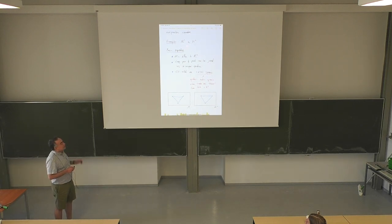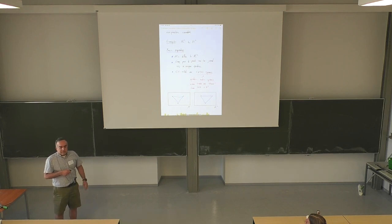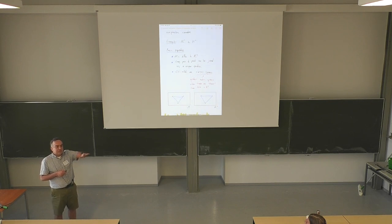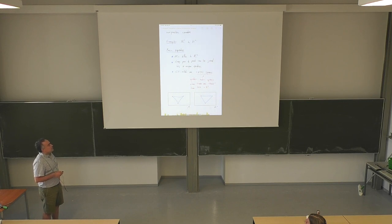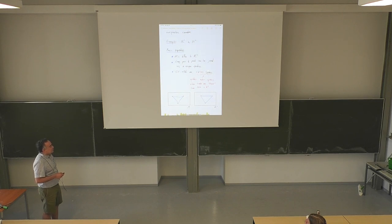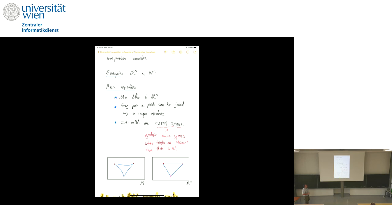By the Cartan-Hadamard theorem, a Cartan-Hadamard manifold is always diffeomorphic to Euclidean space because the exponential map gives a diffeomorphism. You take a point on your manifold, look at the tangent space, look at all the various directions, extend the geodesic from each direction, and this gives a global diffeomorphism between your tangent space and your manifold. It follows that every pair of points can be joined by a unique geodesic. Cartan-Hadamard manifolds are also CAT(0) spaces — a name given by Gromov standing for Cartan-Alexandrov-Toponogov — where zero means curvature bounded above by zero.